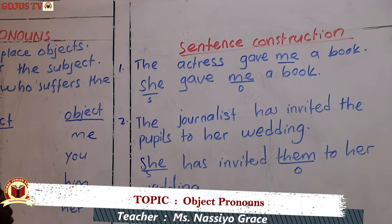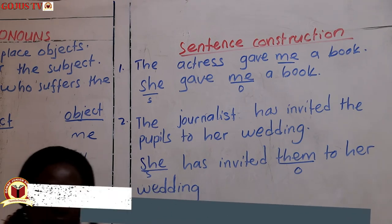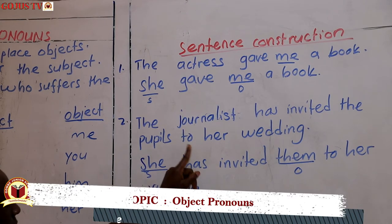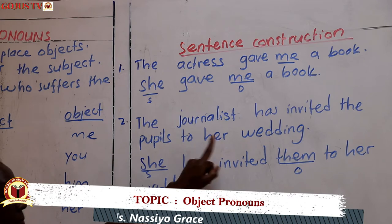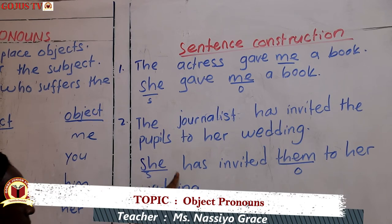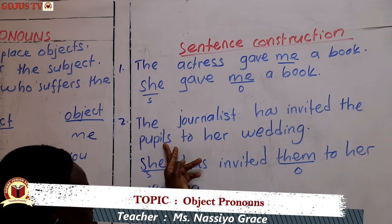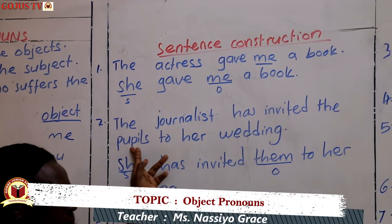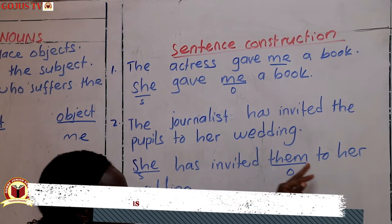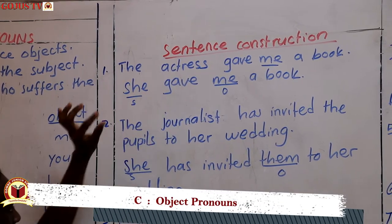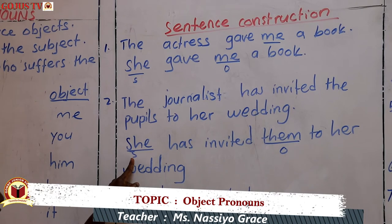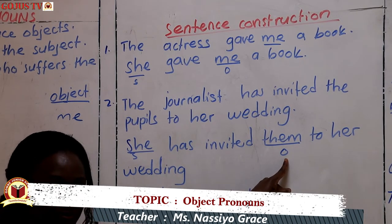Our second example: 'The journalist has invited the pupils to her wedding.' Since we know the journalist is a woman, we use the pronoun 'she'. She is the subject. 'The pupils' becomes 'them' — the object pronoun. So the sentence becomes: 'She has invited them to her wedding.' The journalist is 'she' and the pupils is 'them'. The subject is 'she' and the object is 'them'.